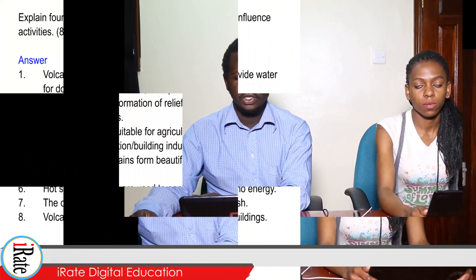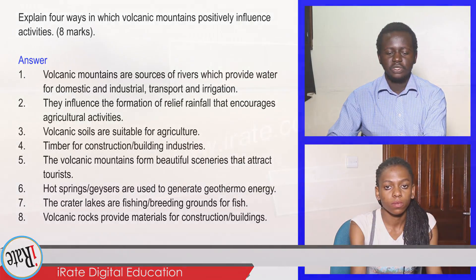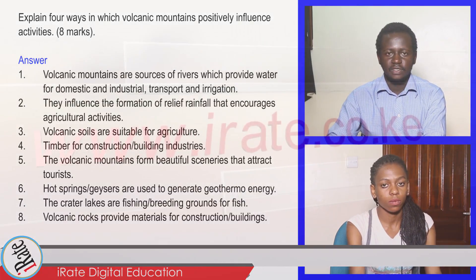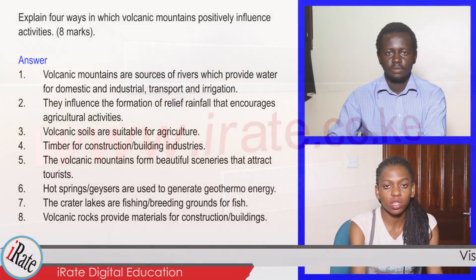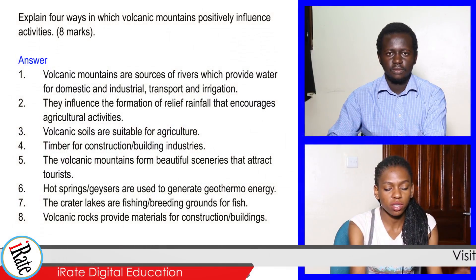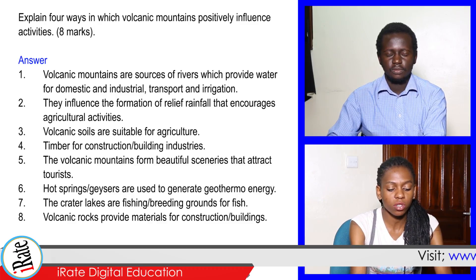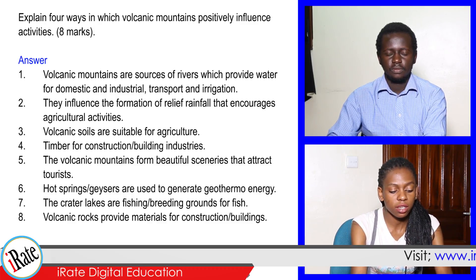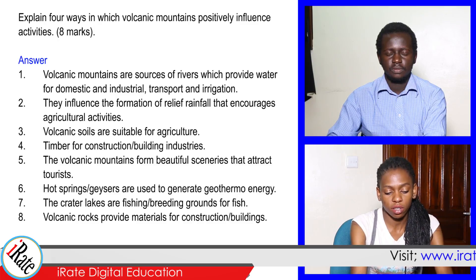Explain four ways in which volcano mountains positively influence activities. Volcanic mountains are sources of rivers which provide water for domestic and industrial transport and irrigation. They influence the formation of relief rainfall that encourages agricultural activities.